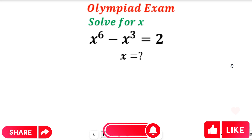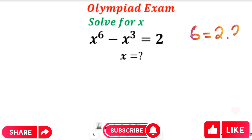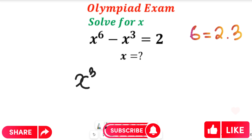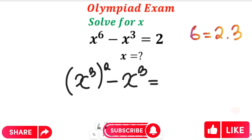To solve this question we want you to bear in mind that x to the power of 6 can be represented as x to the power of 3 multiplied by 2, because 6 equals 2 multiplied by 3. So that whole equation will give us x to the power of 3 squared minus x to the power of 3, and this will be equal to 2.